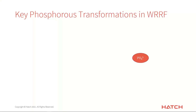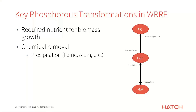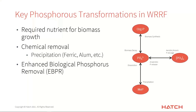We want to be able to predict soluble orthophosphate and understand how it will change over time. The key processes we need to capture in a water resource reclamation facility include: first, the required nutrient for biomass growth — this is not bioP removal, just using phosphorus as a nutrient for regular growth. We also have chemical phosphorus removal by precipitating it out with iron or aluminum. And then enhanced biological phosphorus removal, eBPR — also referred to as luxury uptake — where we grow a specific kind of biomass to accumulate as much phosphorus as possible, then waste them out into solids handling.